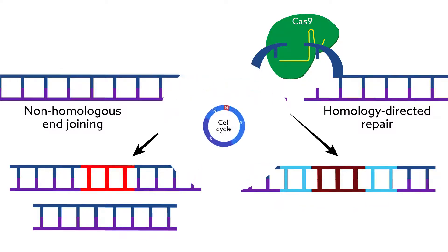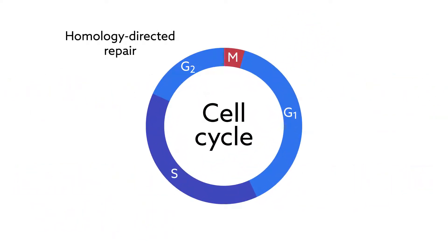Unfortunately, because homology-directed repair has been thought to only happen in the S and G2 phases of the cell cycle, this more desirable method does not work in post-mitotic cells.